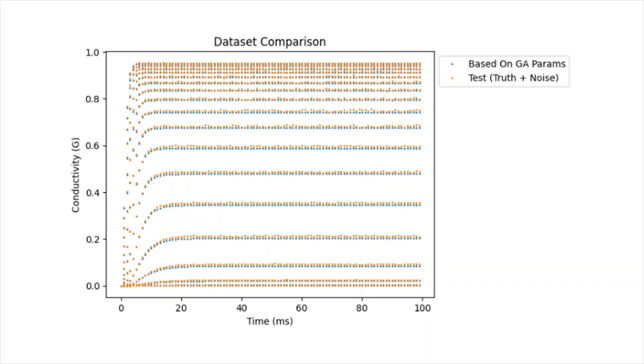In blue, we can see the data that was generated based on the numerical values found by the genetic algorithm. And in orange, the sample of the test. It can be seen that the results are very close, so we concluded that the genetic algorithm is a model that may be suitable for the problem.